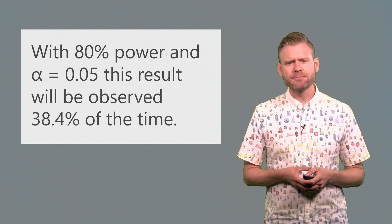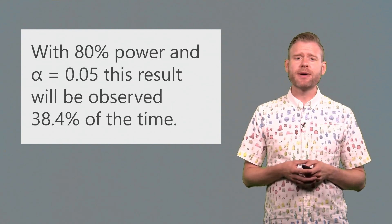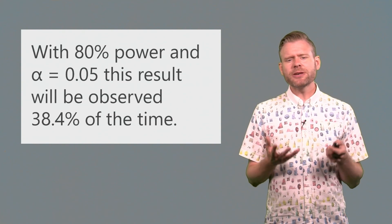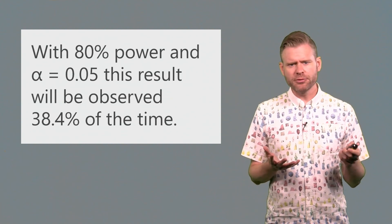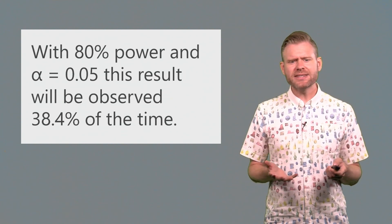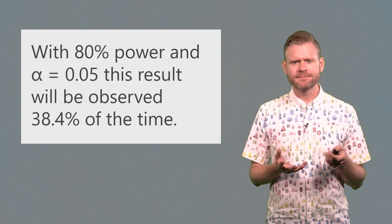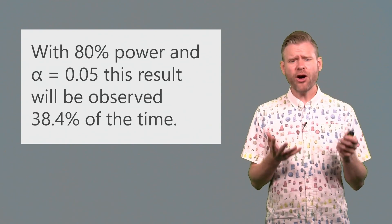If we just calculate the probabilities of this happening, if we assume that you had 80% power, and you use an alpha level of 5%, then this result will be observed in 38.4% of the studies that you perform. If you do lines of research with three studies, you have 80% power and a 5% type 1 error rate. You will observe two out of three results quite often.